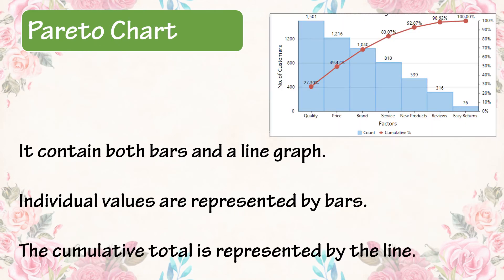Pareto chart: it contains both bars and a line graph. Individual values are represented by bars. The cumulative total is represented by the line.